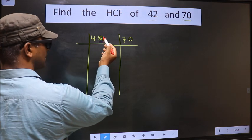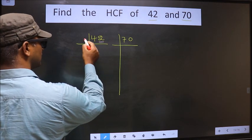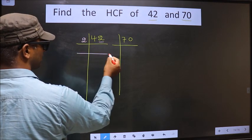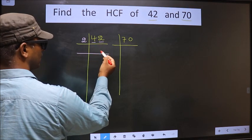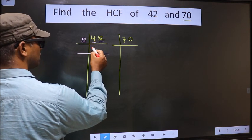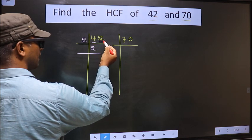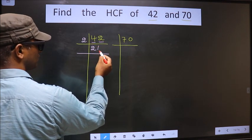For this number, the last digit is 2 which is even. So we take 2 here. The first number is 4. When do we get 4 in 2 table? 2, 2 is 4. The other number 2. When do we get 2 in 2 table? 2, 1 is 2.